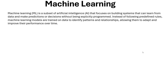Machine learning learns from experiences and from input data. It is a field of AI that focuses on building systems that can learn from data and make predictions or decisions without being explicitly programmed. Instead of following predefined rules, machine learning models are trained on data to identify patterns and relationships.